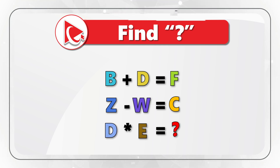You start with the smallest number, 3, then calculate 5, then 9, then the missing number. To get the next number, you double the previous and subtract 1. Example: 3 plus 3 minus 1 equals 5. Then 5 plus 5 minus 1 equals 9. And the missing number: 9 plus 9 minus 1 equals 17. So the correct answer is choice C: 17.